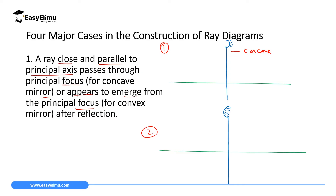For a concave mirror, the focal point F is in front. Since the focal point is half the radius of curvature, we measure equal distance to find C. According to the first ray, a ray close and parallel to the principal axis will be reflected through F. So the ray comes in parallel and is reflected through the focal point F — that is the first ray for a concave mirror.